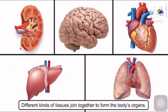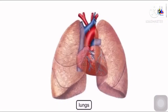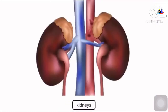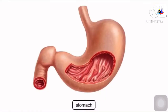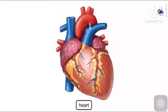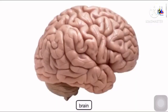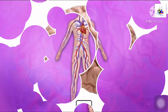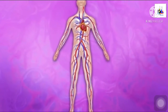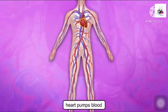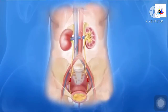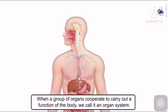Next is organs. Different kinds of tissues join together to form the body's organs. For example, lungs, liver, kidneys, stomach, heart, and brain — these are all organs. Every organ has a different function. The heart pumps the blood, and the function of the kidney is to cleanse the blood.